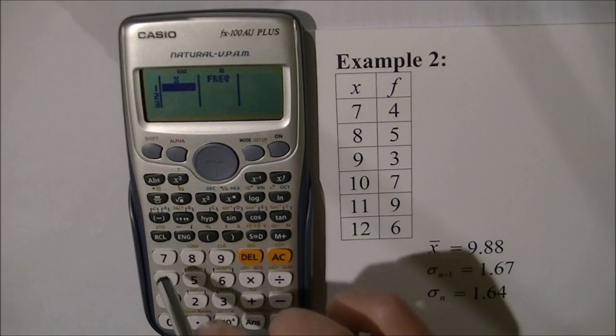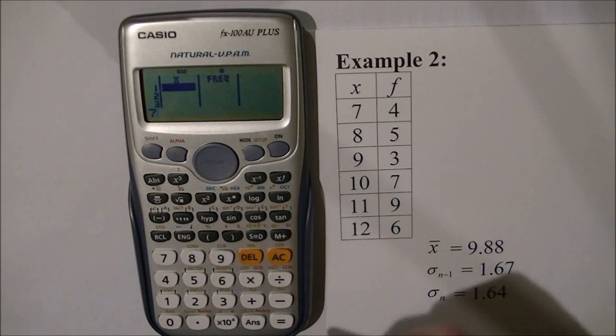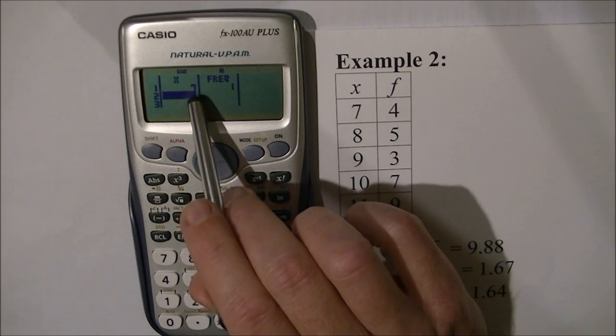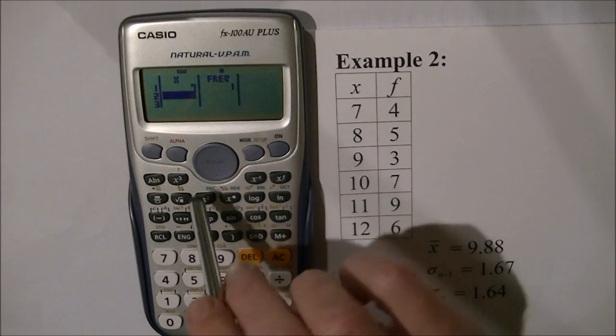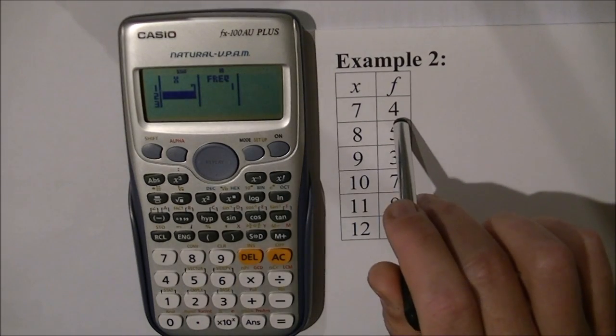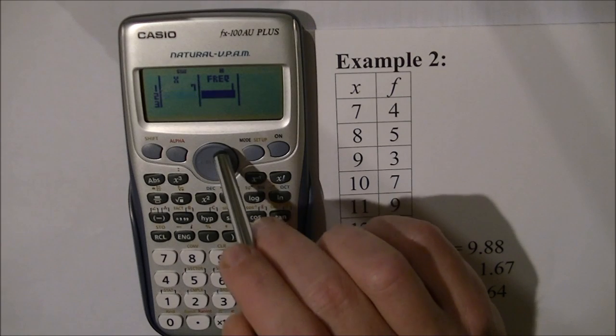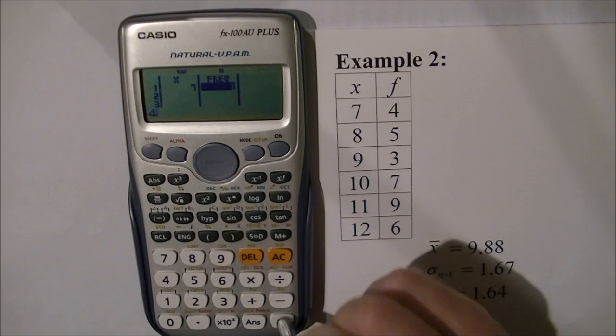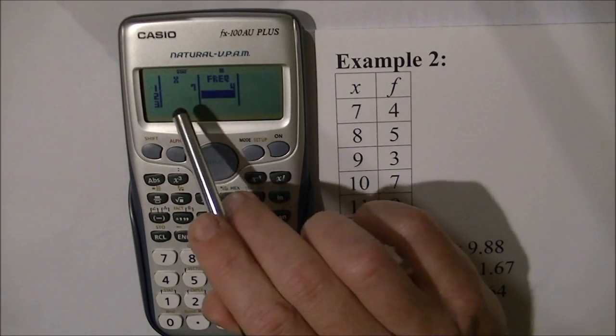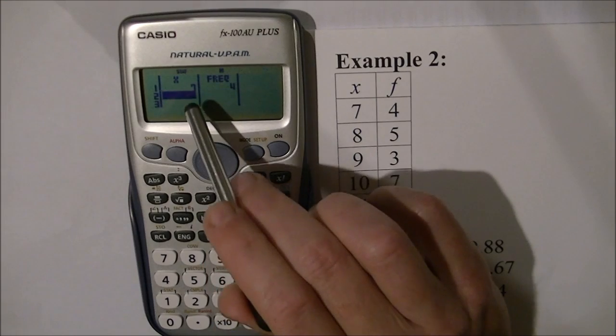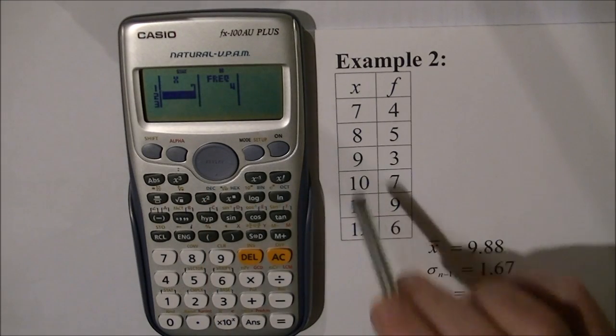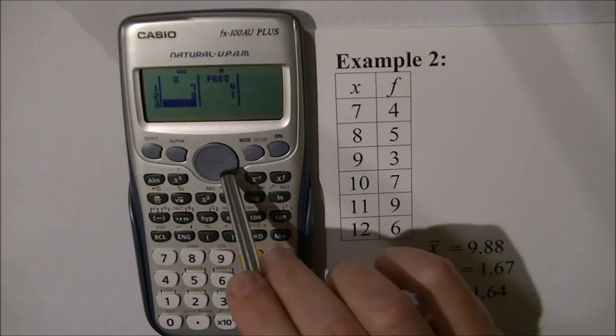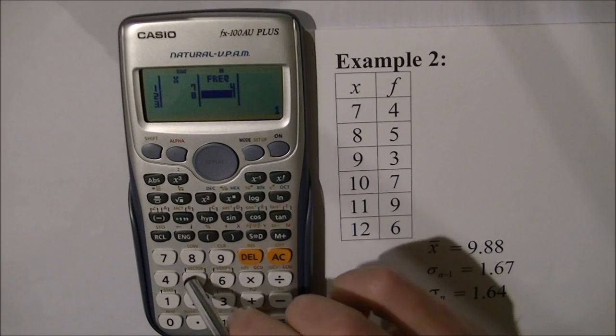Enter the score 7, then press equals. It assumes I want 7 entered once, but I want it four times. Press the arrow keys and navigate to that 1, change it to 4, and press equals. Navigate back to the X column. Now enter 8, equals. Again, it thinks I want it once, but I'll enter 5 times.